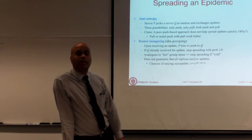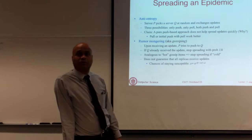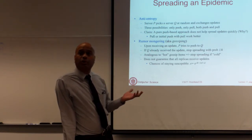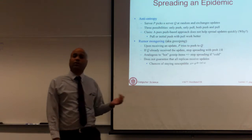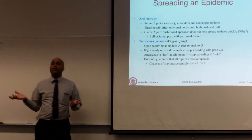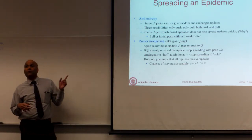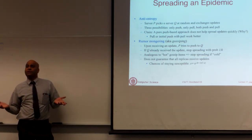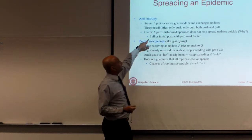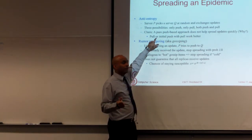I am going to talk about two specific techniques for spreading epidemic — two different algorithms within the class of epidemic protocols. The first one is called anti-entropy. In this case, a server P will pick another server Q at random. Assume there are N nodes in your distributed system; a node will randomly pick another node and connect to it for pairwise exchange. There are three kinds of exchanges: push, where P sends changes to Q; pull, where P asks Q for any updates since last interaction; and both push and pull.